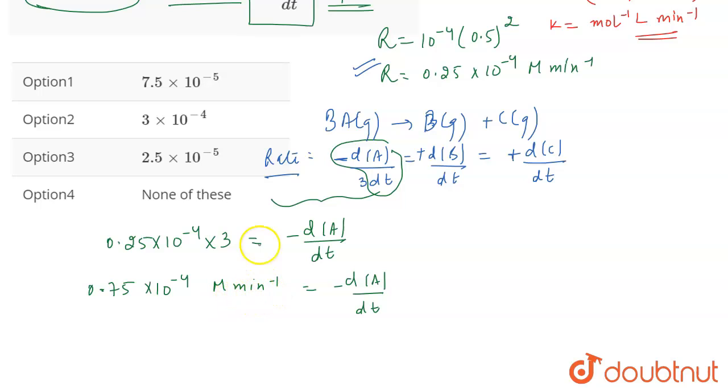So minute inverse means per minute. So you can write it as something like this: this is per minute. Per minute and 1 minute is equal to 60 seconds. So basically what we are going to do is we are going to divide this term by 60, and this is going to give us the answer in molar second inverse. And this value is going to be equal to 0.0125 into 10 to the power minus 4 molar second inverse, and this is given in one of the options.